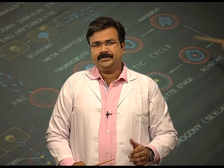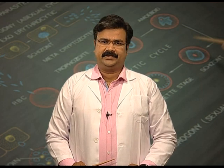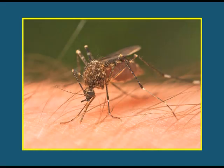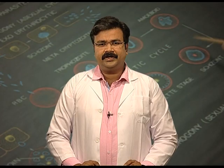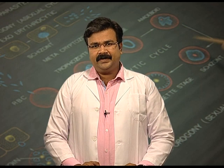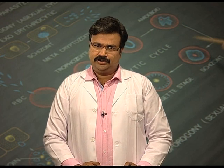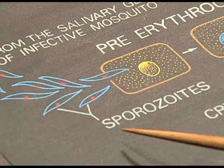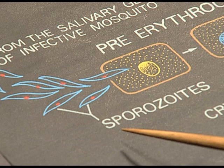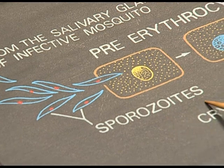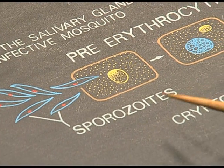Now we need to discuss about the vector. Anopheles carries or transfers the Plasmodium from one individual to another — this is what makes it the vector. When any infected mosquito feeds on healthy human beings, you can see sporozoites coming into blood contact.